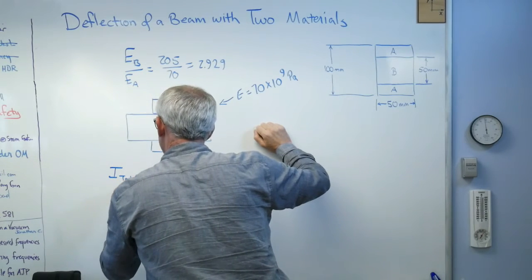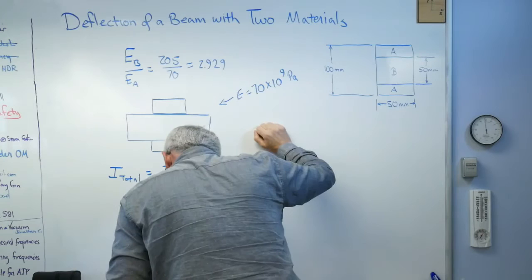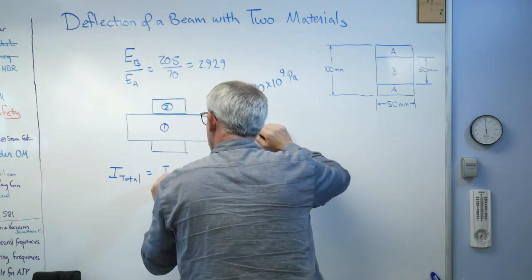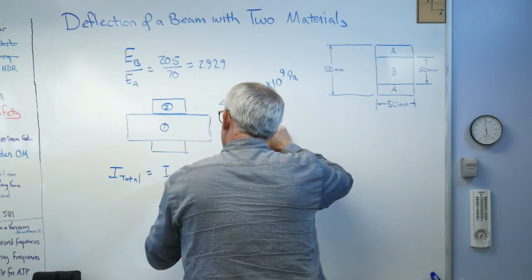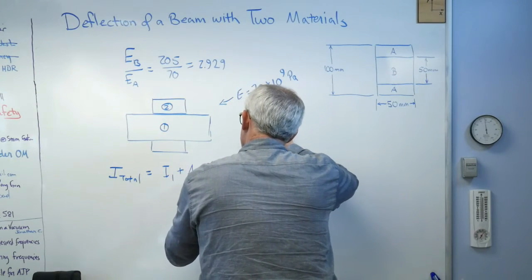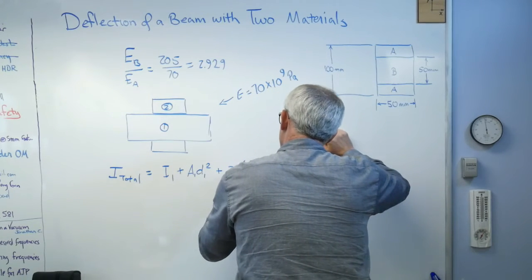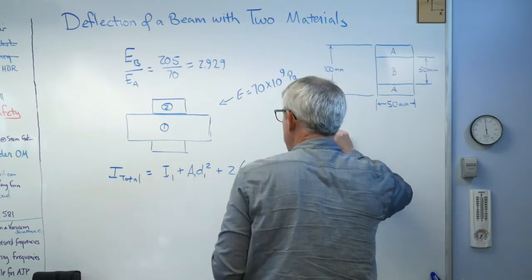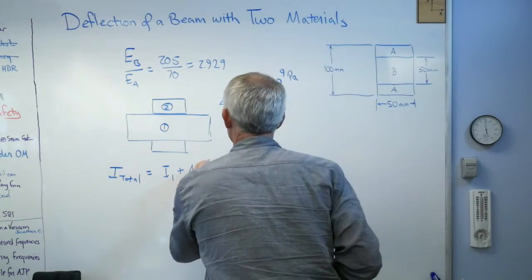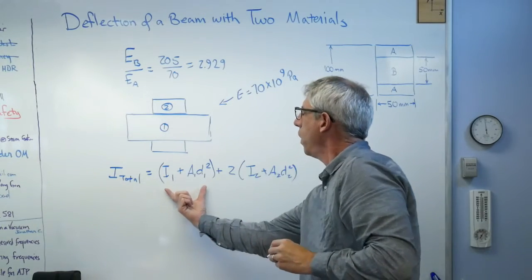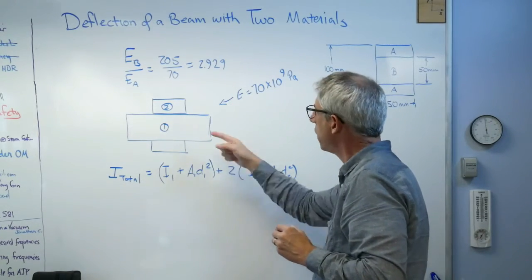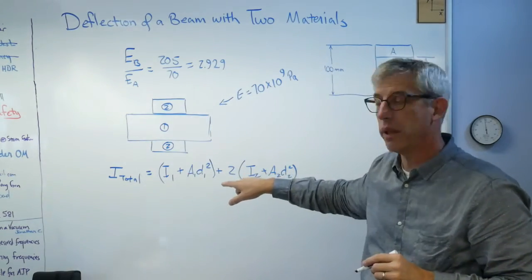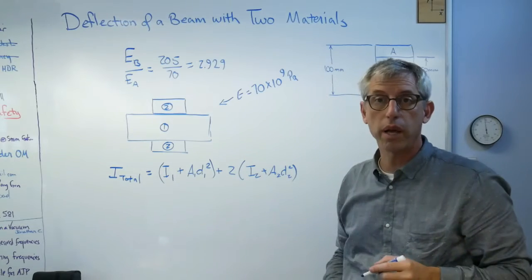So if you do this, what you get, I total is I1 plus A1 D1 squared plus two times I2 plus A2 D2 squared. Now what I'm doing here is I'm using the parallel axis theorem. There's one box, that's that middle one, and then there's the second box right there. Well, these are both the same, so I'll just multiply it. I'll include this once and multiply it by two.